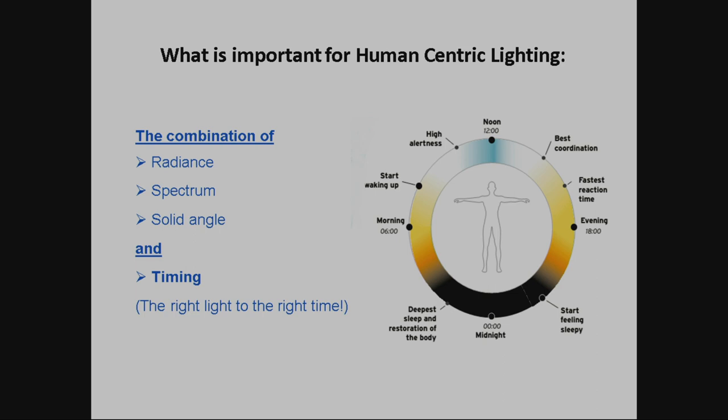This is the importance of human-centric lighting, because we want to integrate in commercial lighting the combination of radiance, spectrum, solid angle of a light source, and timing information — the right light at the right time — because our clock has distinct abilities. We are very fit in the afternoon physically, have high alertness in the early afternoon, and in the morning and evening we are so-so. In the night, the body usually wants to sleep.